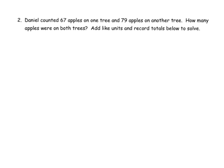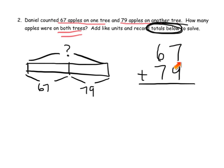We're going to stack it up vertically: sixty-seven plus seventy-nine. They are asking us to specifically practice this totals below method. We've got seven ones plus nine ones — that gives us sixteen ones. And then we have six tens plus seven tens — that's thirteen tens.